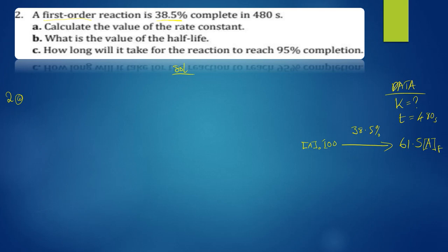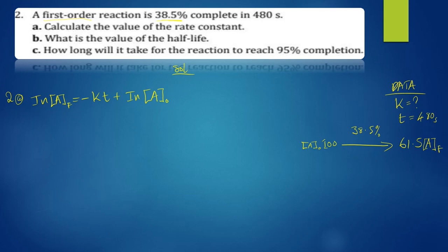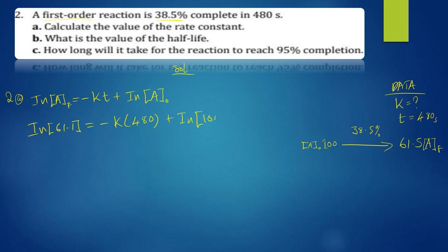For the first order, the integrated rate equation is: ln[A] = -kt + ln[A₀], where [A] is the final concentration, k is the rate constant, t is time, and [A₀] is the initial concentration. Substituting: ln(61.5) = -k(48) + ln(100).